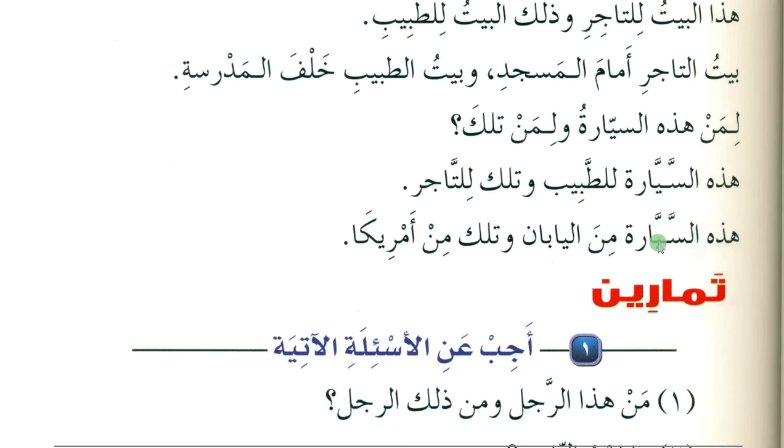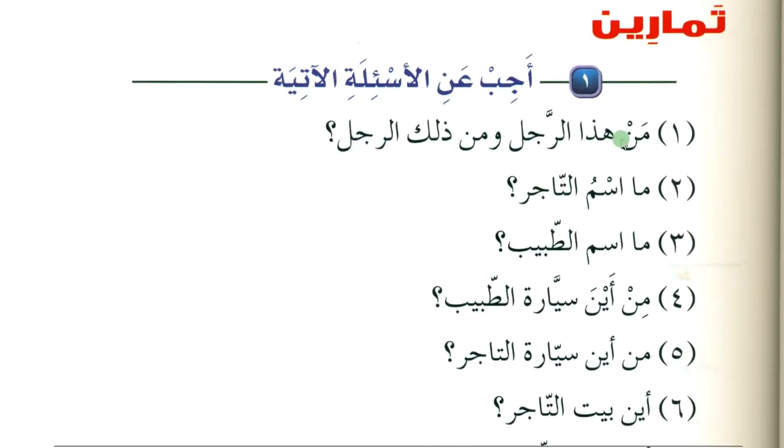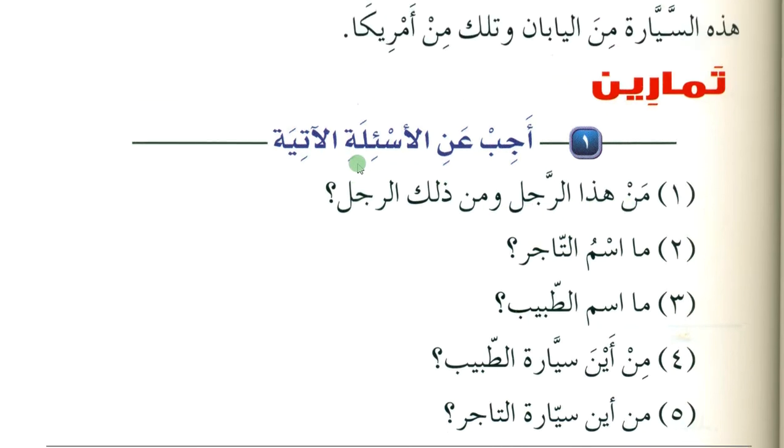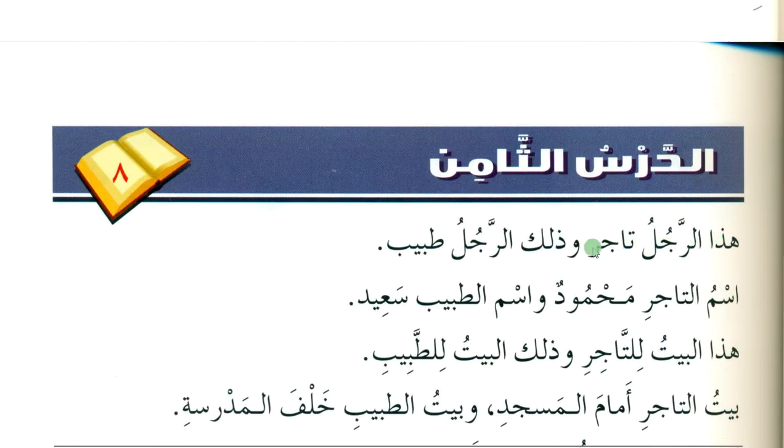Liman hazihi as-sayyaratu wa liman tilka — 'to whom does this car belong and to whom does that belong?' Hazihi as-sayyaratu lil-tabib wa tilka lil-taajir — 'this car belongs to the doctor and that belongs to the merchant'. Hazihi as-sayyaratu minal-yaban — 'this car is from Japan and that is from America'. Exercise: answer the following questions according to the lesson. Man haza ar-rajul — 'who is this man?' Haza rajulun taajir wa zalika rajulun tabib — 'this man is a merchant and that man is a doctor'.